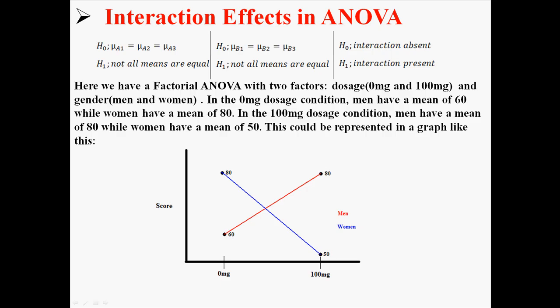So now the graph would look something like this. You can see that the lines for men and women cross. If the lines cross like this, that means you have an interaction effect in your ANOVA. Basically, what an interaction means is that the effect at one level depends on the other level.